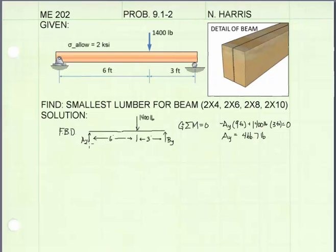I begin by drawing a free body diagram of the beam to solve for the support reactions. I've called the reaction on the left A, the one on the right B, and summing the moments about point B equal to 0, we can solve for the reaction at A. It is equal to 466.7 pounds.